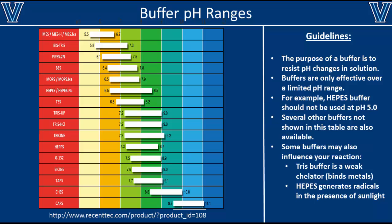You can find many more online which may be useful for your experiments. Aside from the pH range of a buffer, you should also consider its chemical reactivity. For example, Tris buffers are weak chelators, meaning they will weakly bind metal ions. In addition, HEPES buffers generate free radicals that can significantly interfere with your chemical reaction if exposed to sunlight. Therefore, you should always remember to check the pH range and the reactivity of your buffer to make sure it is ideal for the reaction that you are trying to do.